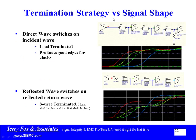So here we go — termination strategy versus signal shape. These pictures come from Minter's HyperLynx tool, a very nice tool. There are two fundamental routing topologies: one is direct wave, the other is reflected wave. Direct wave switches on the direct or incident wave. In other words, there's the driver, a transmission line to the first receiver, and it switches.